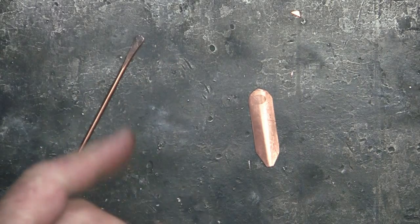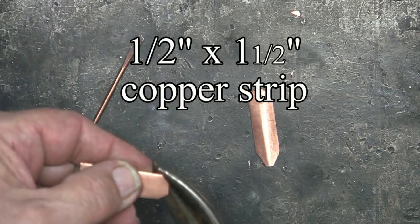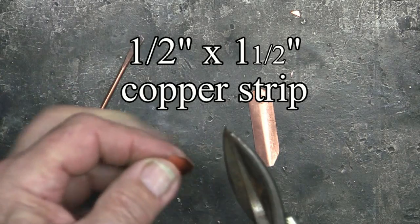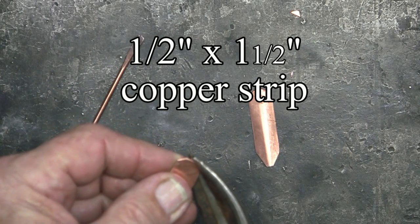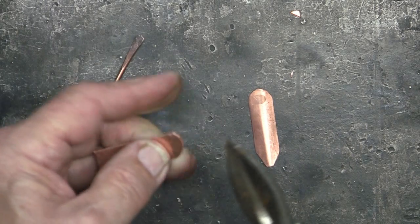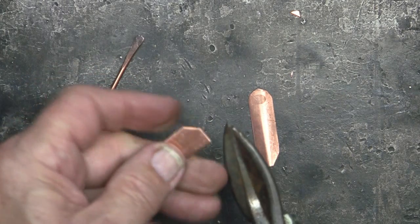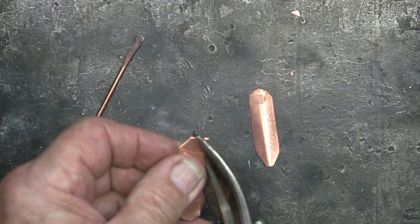For the paddle, starting off with a piece of copper one half inch wide by an inch and a half. So I want this to be like the one that I have laying here on the right. I'll nip off these corners, round it off, and then go down to the end which will go on the shaft.